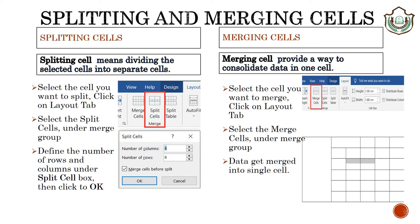Splitting and merging cells. Students, we can split cells. Splitting means dividing the selected cell into separate cells. Whereas merging means merging cells provides a way to consolidate data in one cell. We can split cells as well as we can merge cells by following these steps.